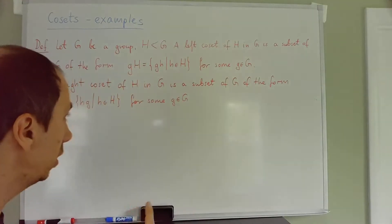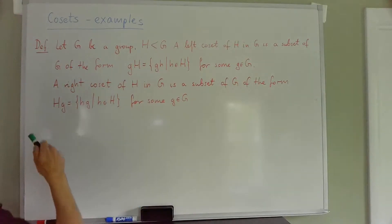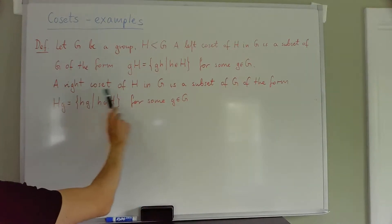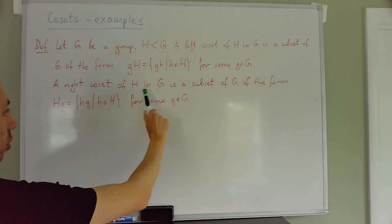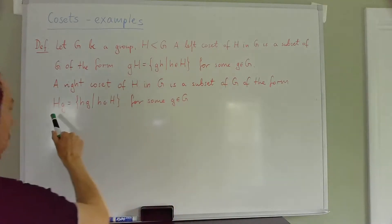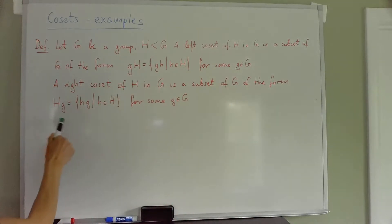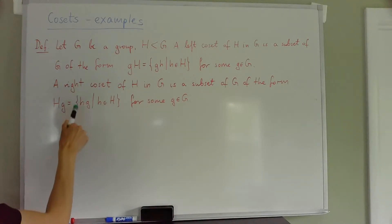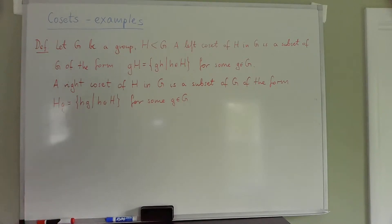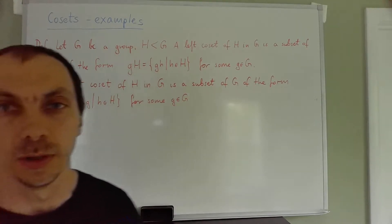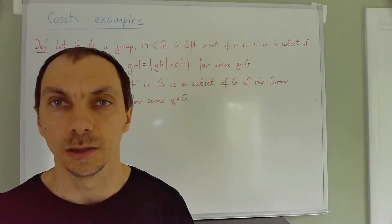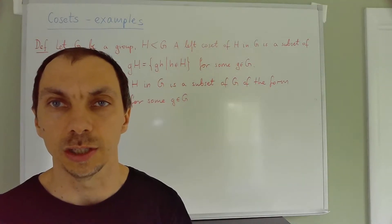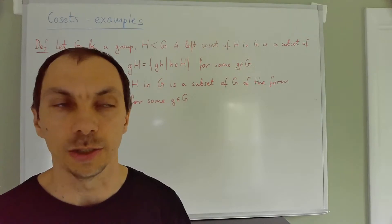You'll see this in examples soon. A right coset of H in G is a subset of G of the form Hg, where we fix a little g and multiply on the left by any possible h in the subgroup H.